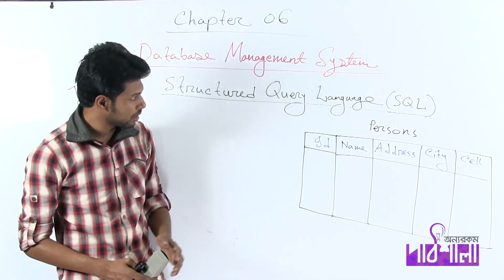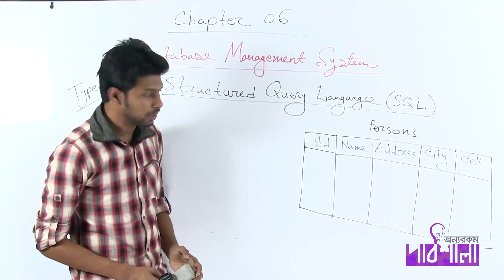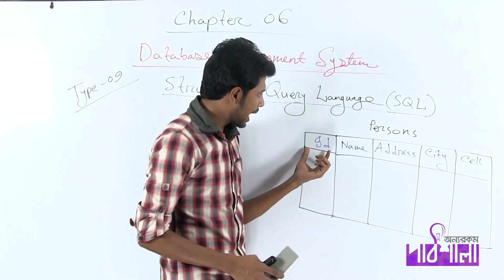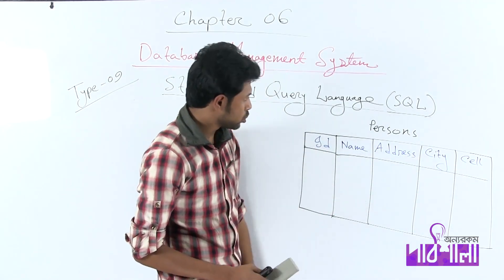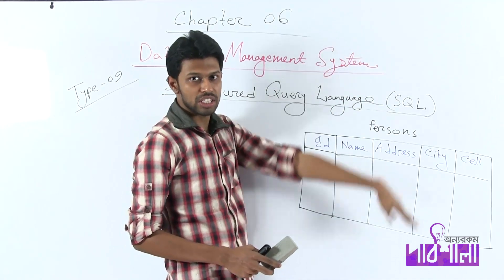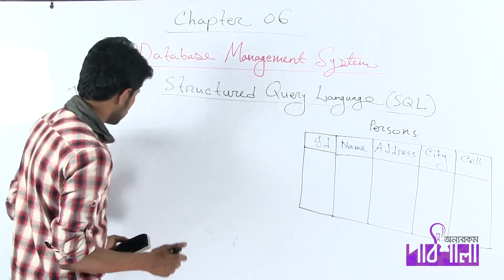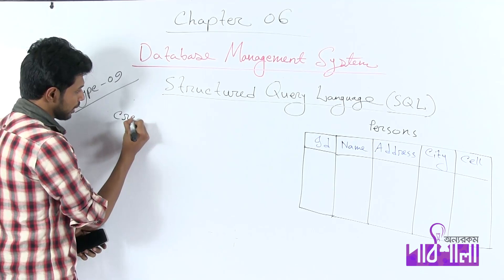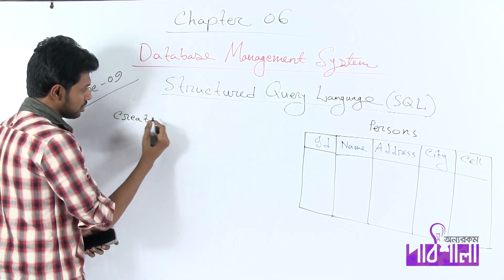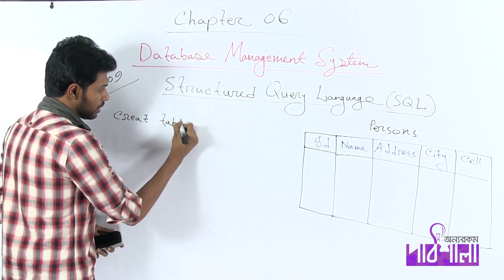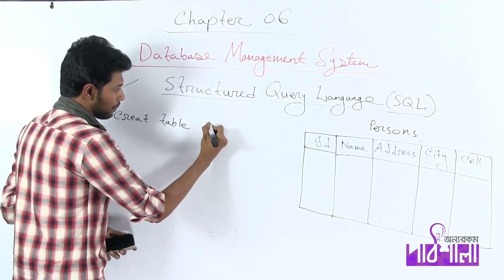Here we have a sample table which is called the persons table. In this table, the columns are called id, name, address, city, and cell. Now let's look at the table. We have created a table. Here we have the SQL statement called CREATE TABLE — the SQL statement, table name: persons.